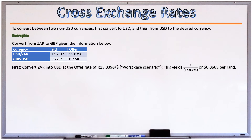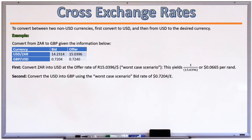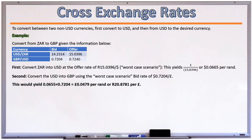We assume the worst-case scenario rate, using the offer rate of 15.0396 rand per dollar — meaning we pay more rands to get that dollar. This yields 1/15.0396 = 0.0665 dollars per rand. For the second step, we convert dollars into pounds using the worst-case bid rate of 0.7204 dollars per pound, since we receive as few pounds as possible for our dollars. This yields 0.0665 × 0.7204 = 0.0479 pounds per rand, or inverted: 1/0.0479 = 20.8781 rand per pound — the bid price for a ZAR-to-GBP conversion.